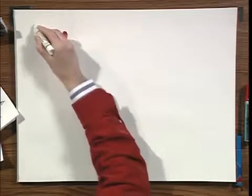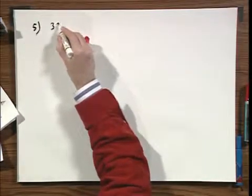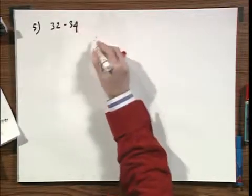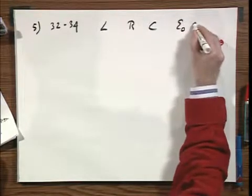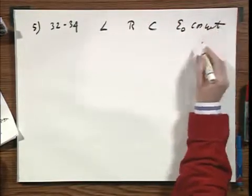Again, an RLC circuit. I have an L, I have an R, I have a C, and I have an E zero cosine omega T.